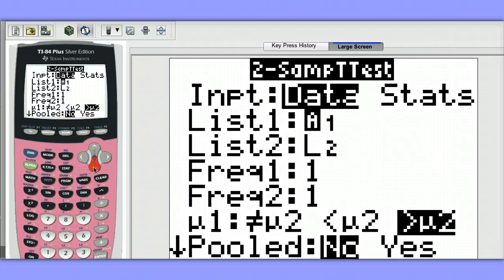Our data is stored in list 1 and list 2. If I didn't have the actual data, I would choose stats here.